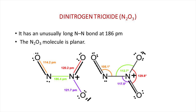Another nitrogen oxide is dinitrogen trioxide, with the chemical formula N2O3. It has an unusually long nitrogen-nitrogen bond length of 186 picometers. The N2O3 molecule is planar, and the bond lengths and bond angles are shown in the figure.